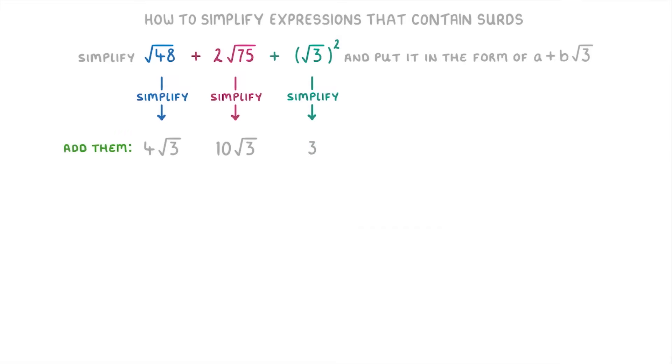Then we can add these three terms together, so 4√3 plus 10√3 plus 3, and that will give us 14√3 plus 3. But remember, because we want it in the form of a plus b√3, we're going to switch this around and rewrite it as 3 plus 14√3, which will be our final answer.